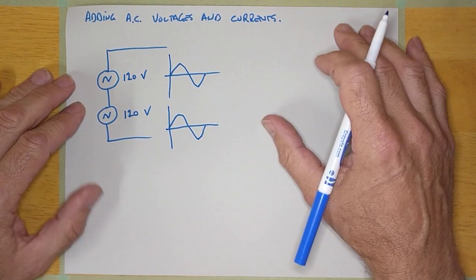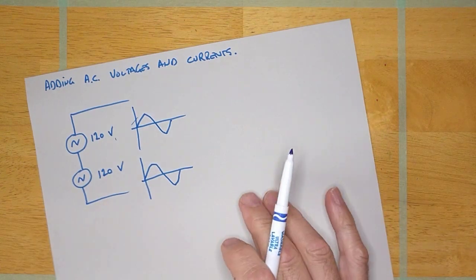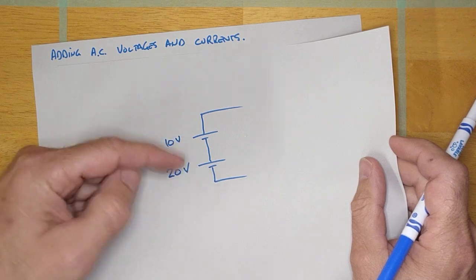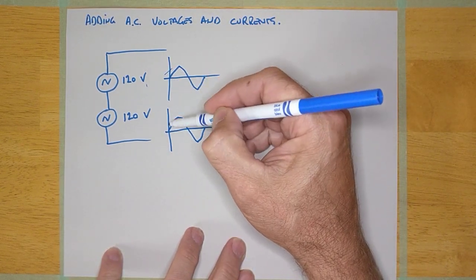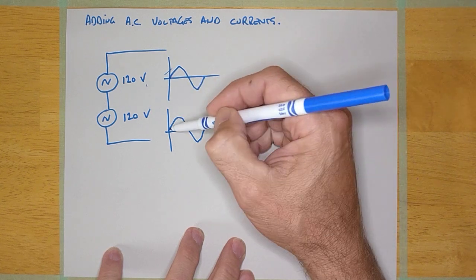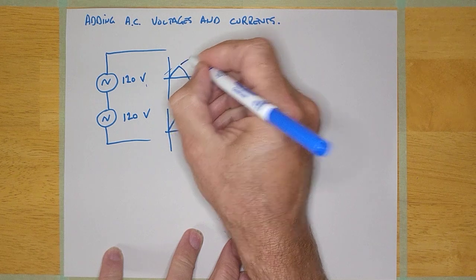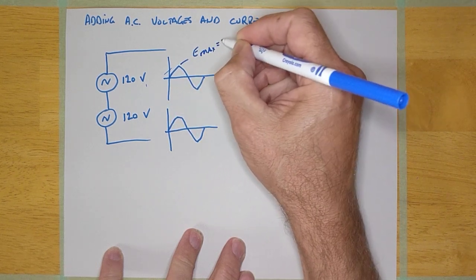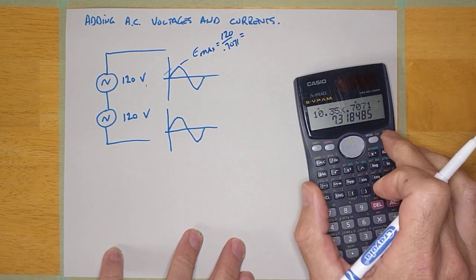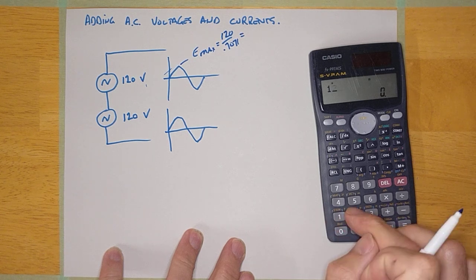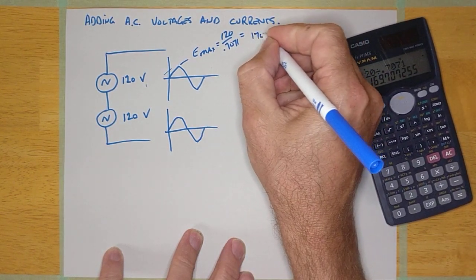The best way to figure out what's going on here is to think about our DC circuit, where I can just add the two voltages together and get the sum. But these voltages are always changing. So what's actually occurring is I've got to add the two instantaneous values of voltage together along the entire sine wave. Now, if this is 120 volts, that's the RMS or effective value. It means that the max value, which is equal to 120 over 0.7071 — E effective over 0.7071 — comes out to basically 170 volts. It's 169.7, so we'll call that 170 volts peak.